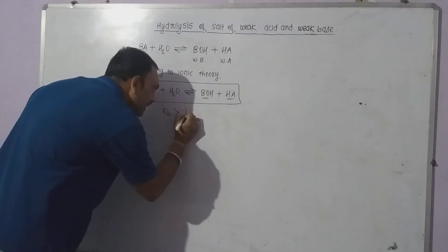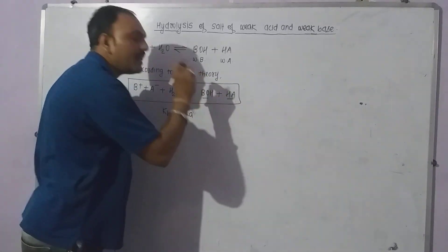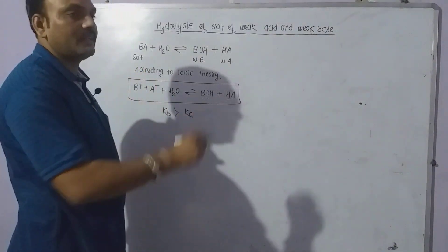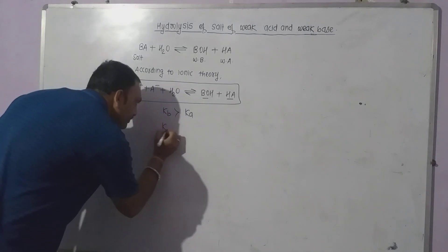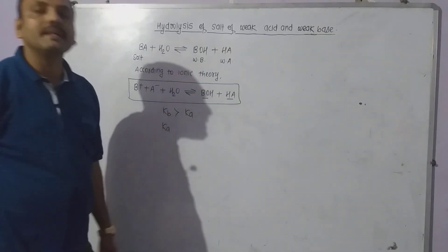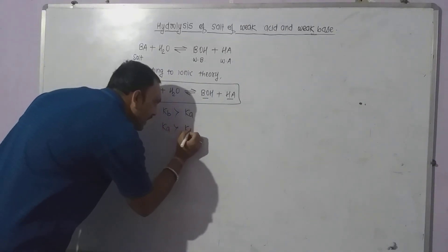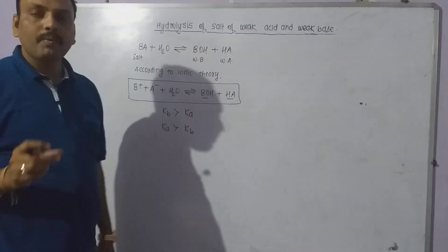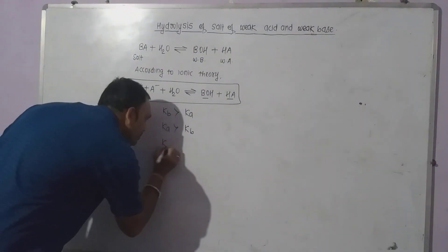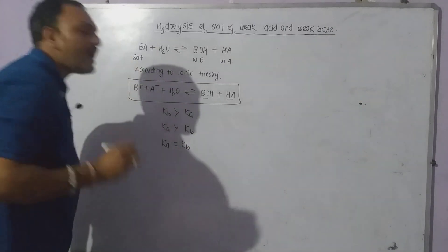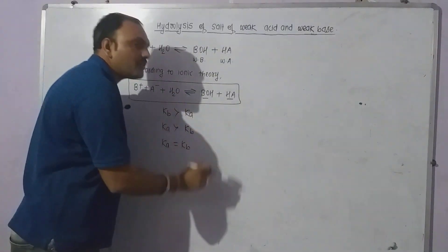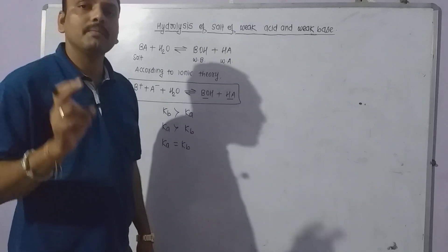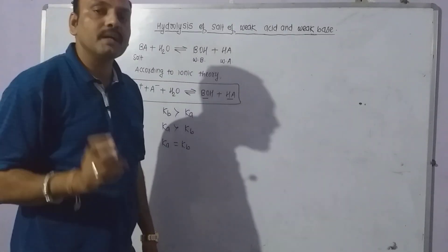If the dissociation constant of the base, Kb, is greater than the dissociation constant of the weak acid Ka, then the aqueous solution of the salt is found to be basic. On the other hand, if Ka is greater than Kb, then the aqueous solution of the salt is found to be acidic. And if the dissociation constants of acid and base are equal — that is, Ka equals Kb — then the aqueous solution of the salt of weak acid and weak base is found to be neutral in nature. Thank you very much.